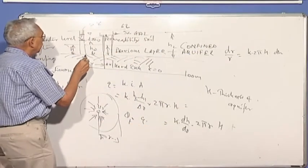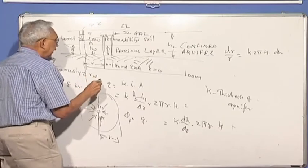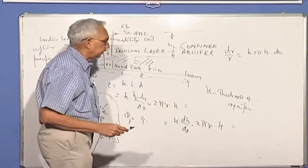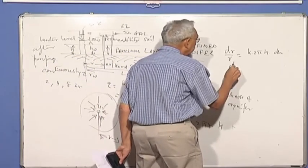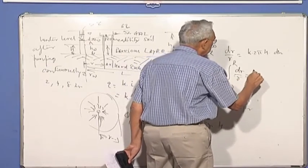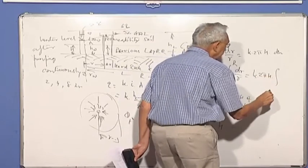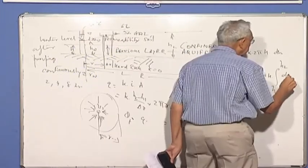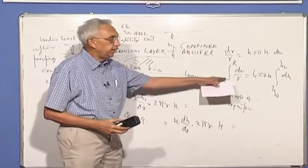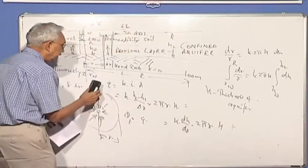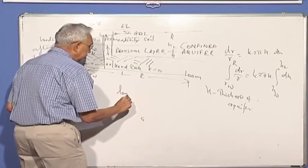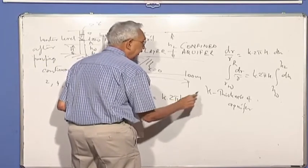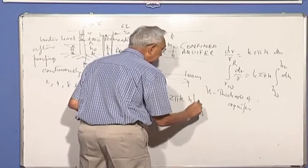Let's integrate now. R varies from the radius here of the well RW, and this is far away, so I'll call it as a distance capital R where the head does not change. So we'll integrate this from RW to capital R, DR by R is equal to 2 pi H integral H near the well to the original water level, that is HF, into DH. It's a very simple integration, you can do that. DR by R is log to the base E of R, so we can now write that as, this is log to the base E radius of the well to R, this is equal to K, 2 pi H, integral of DH is H varying from HW to HL. So that is nothing but log to the base E R by RW is equal to K times 2 pi H into H.